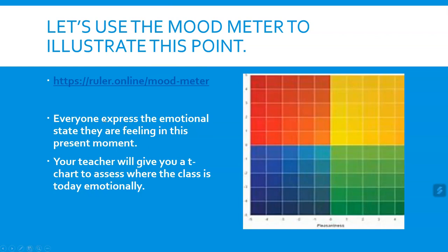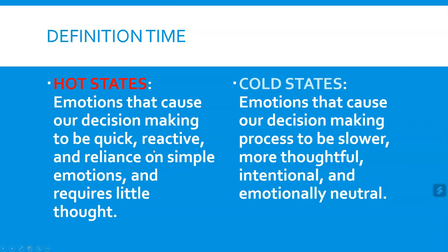Your teacher can click on this link, and everybody can express the emotional state they are feeling at the moment. While you are doing that, the teacher will give you a T-chart to see where the class is emotionally. Once everybody plots their emotion, we're going to put it on a T-chart — hot states and cold states — but first you need the definitions.